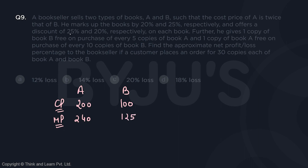He is giving a discount of 25% and 20% on A and B respectively. So what is the selling price of A? 25% less than 240 is 180, and 20% less than 125 is 100. So the selling price of A is 180 and B is 100.